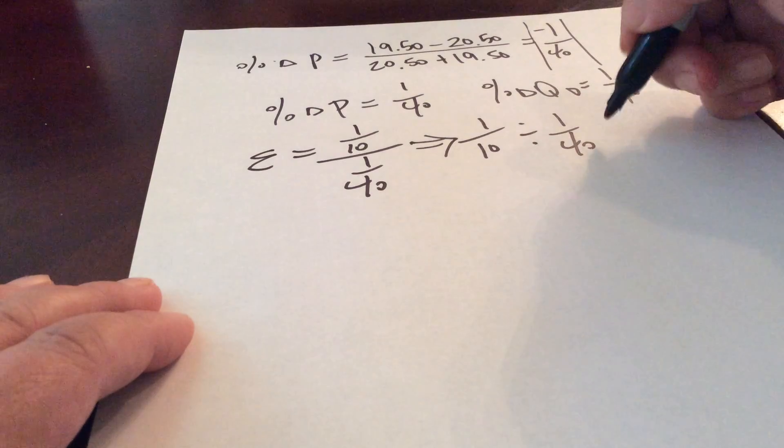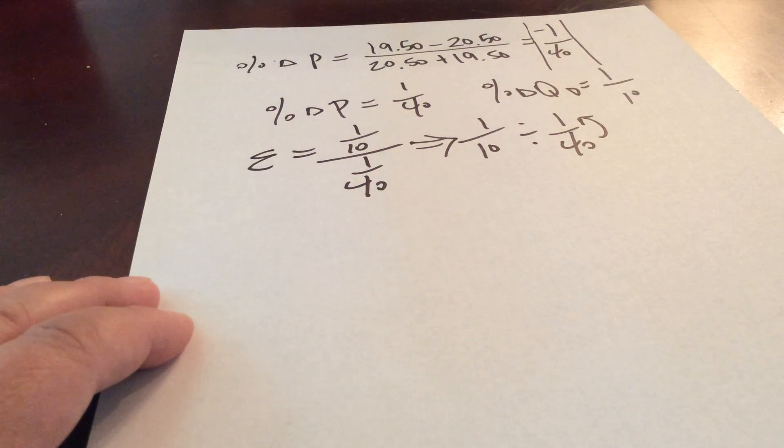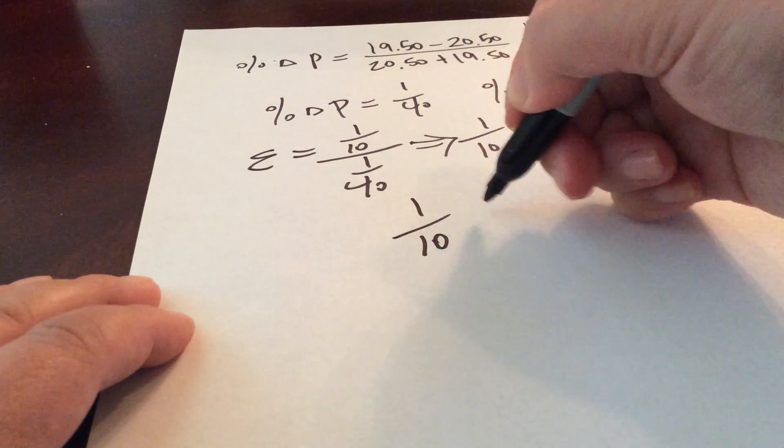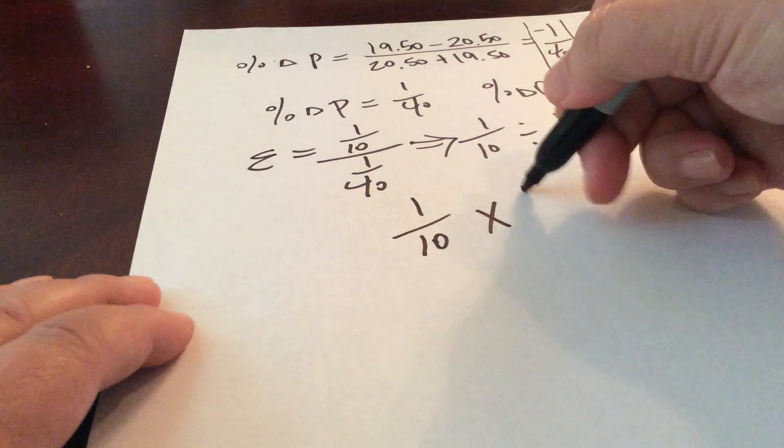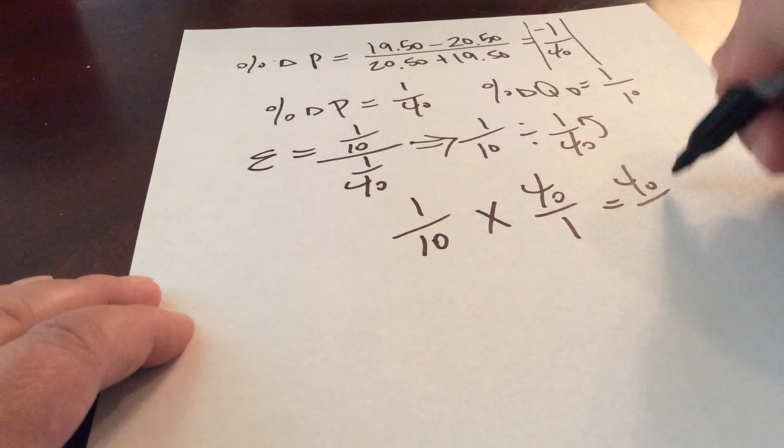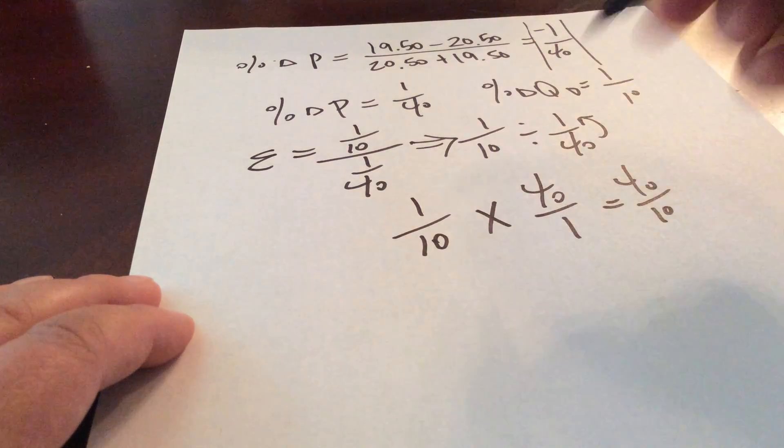And for the reciprocal, we're just going to flip or invert that fraction. So we'll have 1 over 10 times 40 over 1. 1 times 40 equals 40. 1 times 10 equals 10.